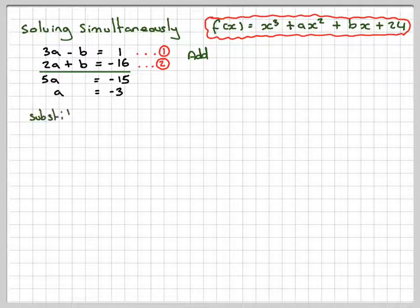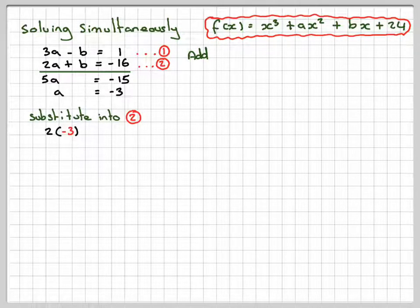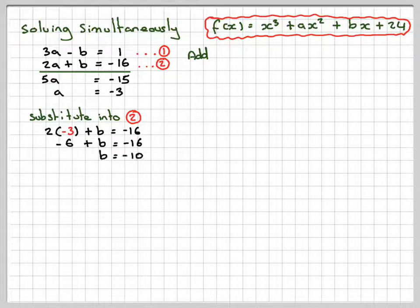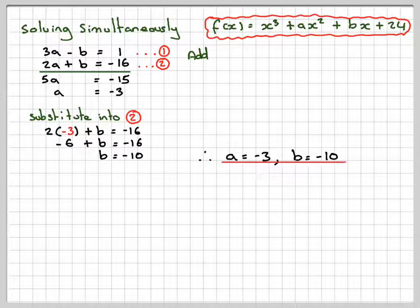If we substitute into equation 2, we're going to have 2(-3) + b = -16. So a = -3. -6 + b = -16 gives me b = -10. So we've got a = -3, b = -10.